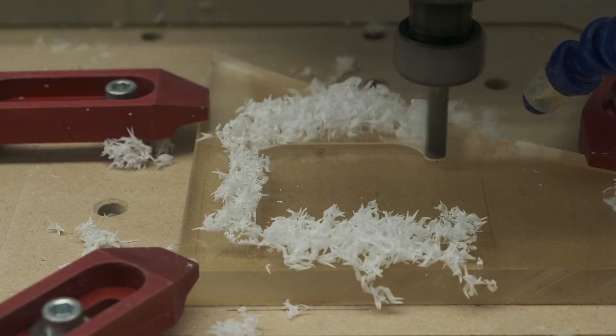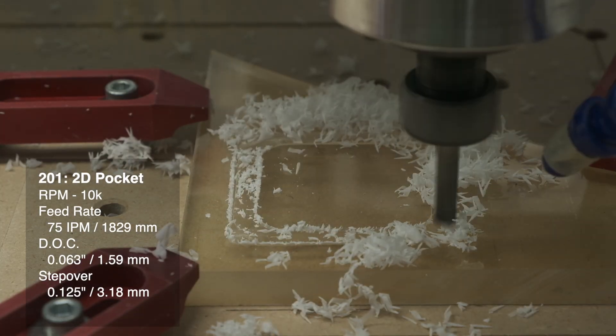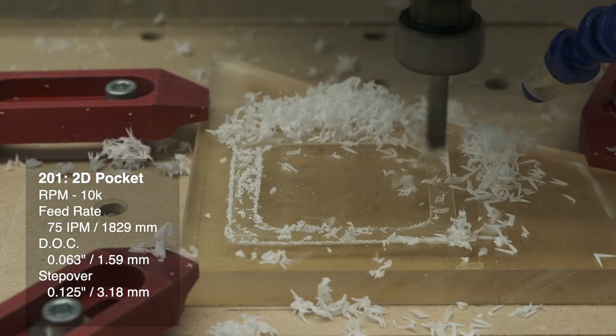And lastly, for a quarter-inch end mill like our 201 cutter, for pocketing, 10,000 RPM, 75 inches per minute, a 0.016 inch depth of cut, and an eighth-inch step over.